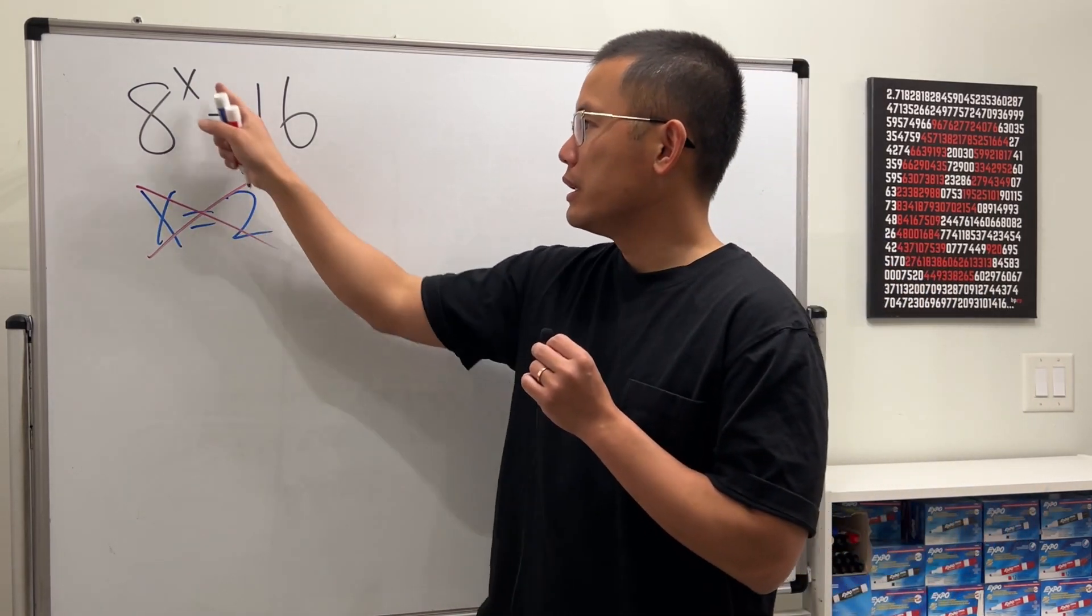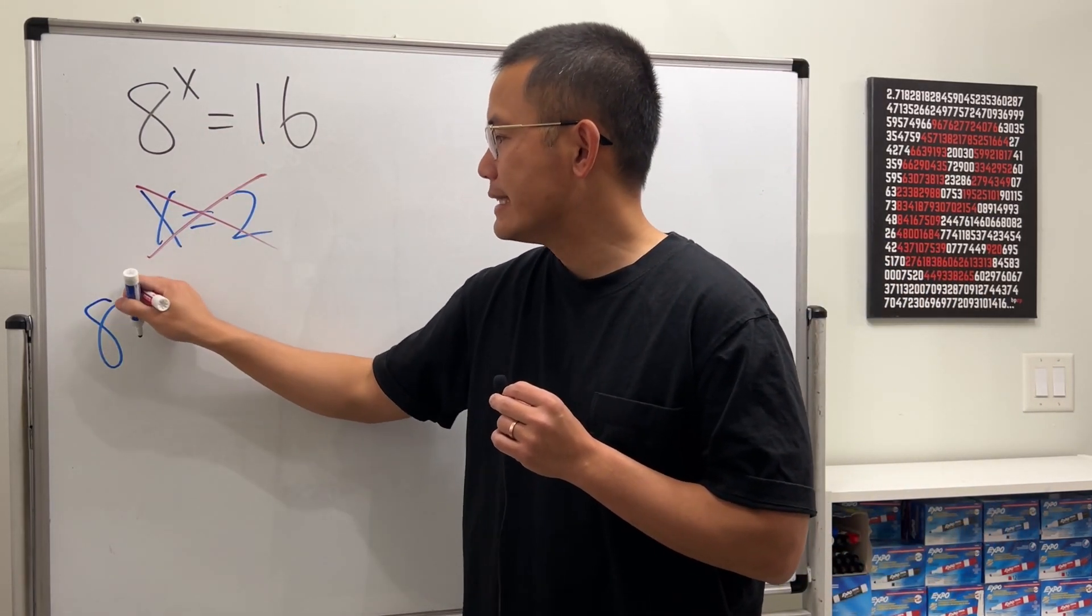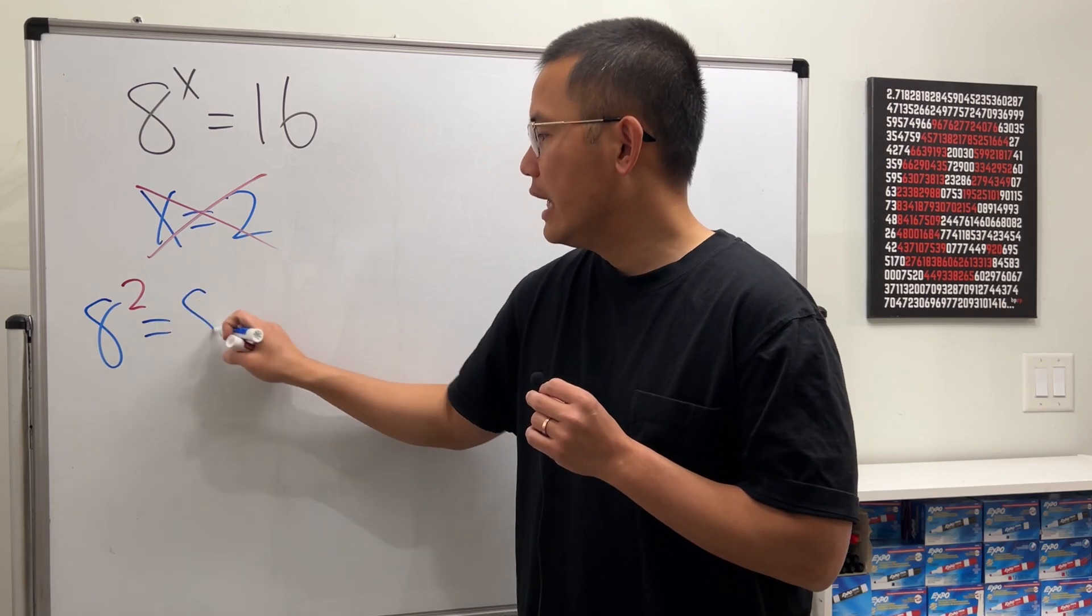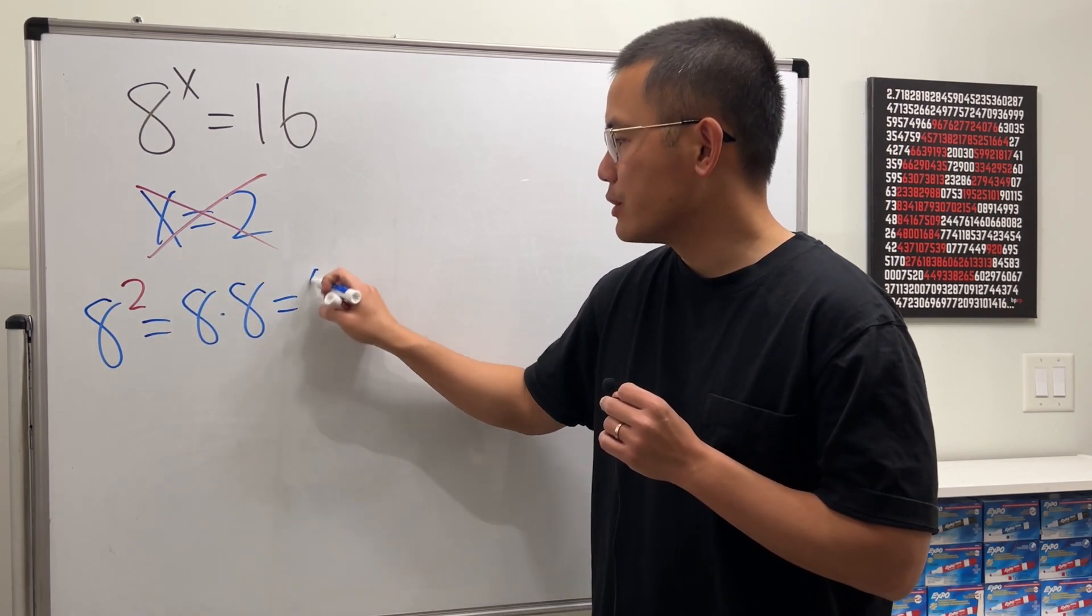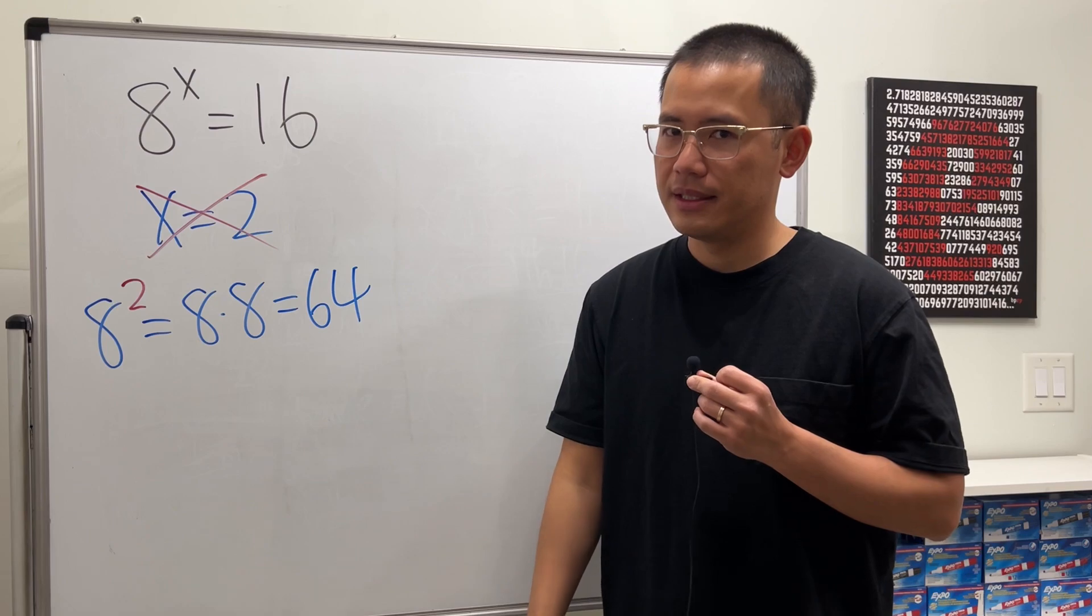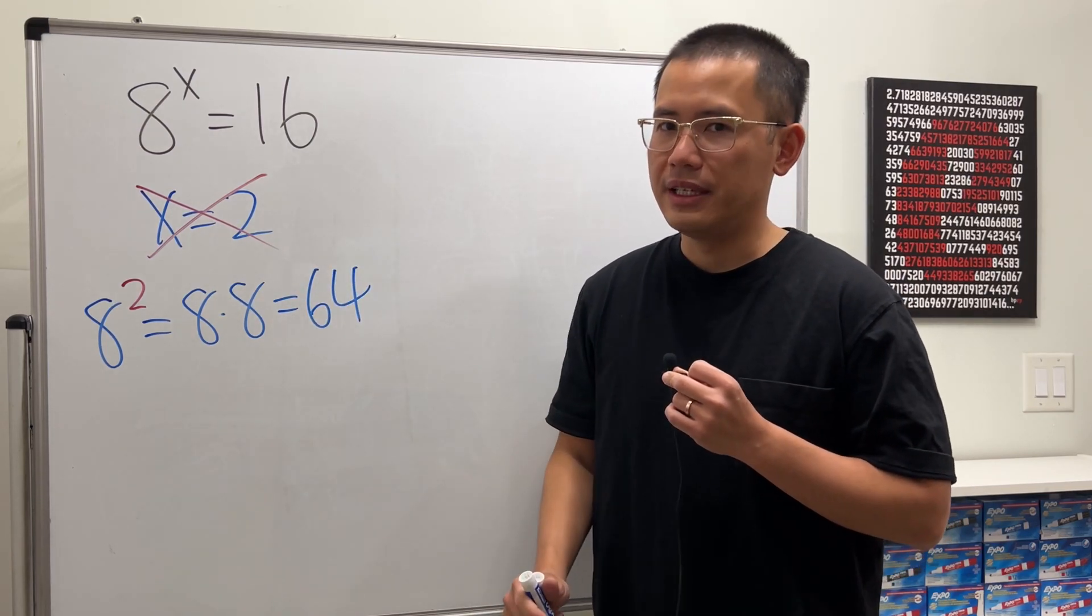Because if you put 2 in here, we get 8 to the second power, which means 8 times 8, and that's actually 64, not 16. So 2 is not the answer.